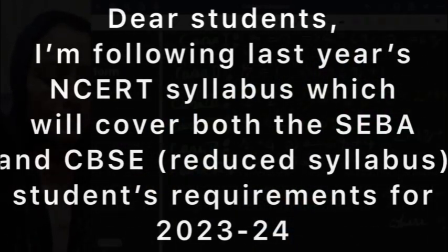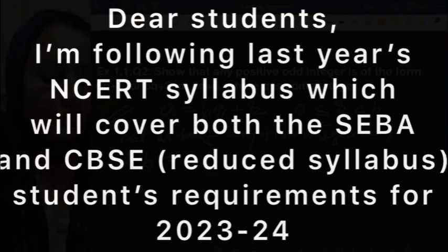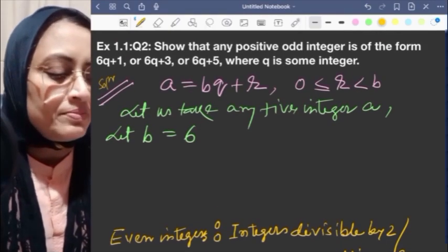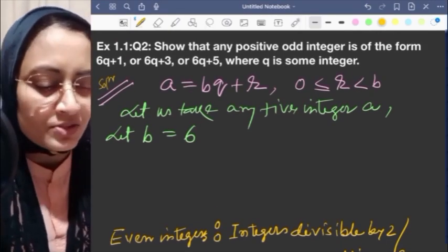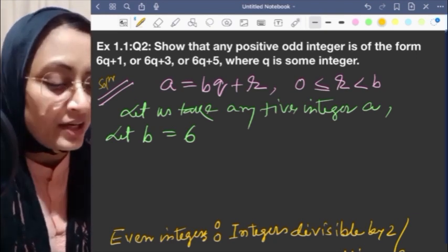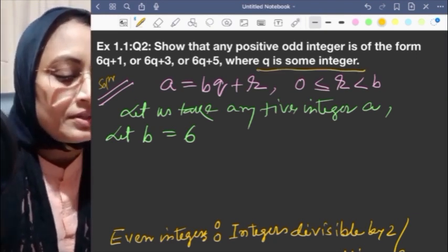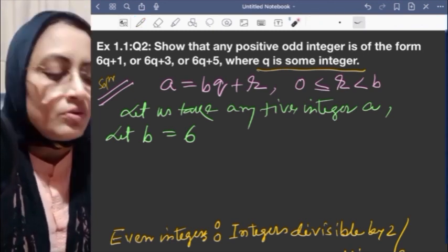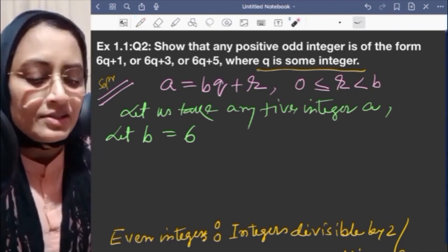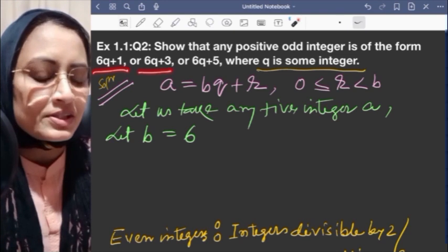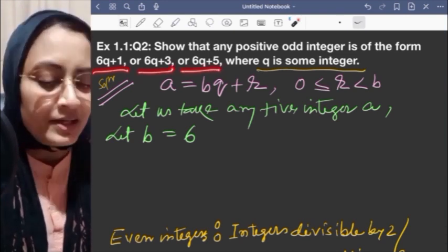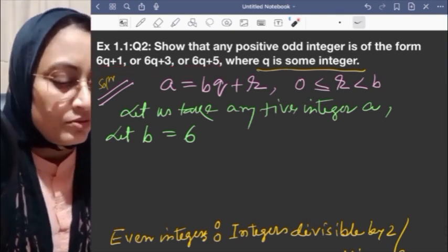Question 1.1 number 2 says: show that any positive odd integer is of the form 6q+1, 6q+3, or 6q+5, where q is some integer. We need to show that any odd integer is of the form 6q+1, 6q+3, or 6q+5.